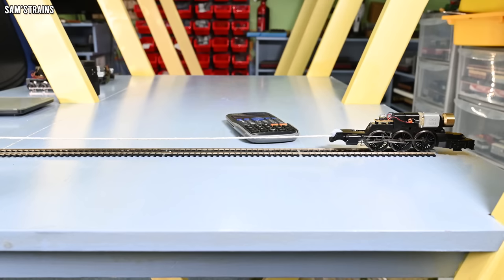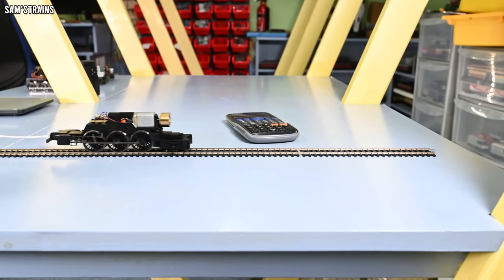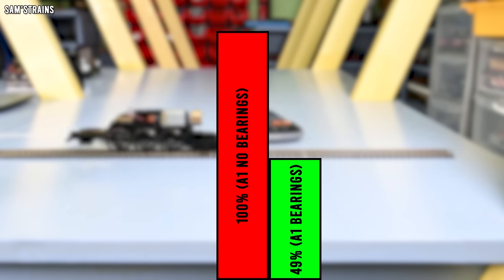And now I have a pretty conclusive result. The chassis without the proper bearings took an average of 16.16 grams to move it which is a force of 0.16 newtons. Now the chassis with the bearings took only 7.93 grams to move the loco and therefore the average force required here was 0.078 newtons which is only 49% of the force required to move the chassis without bearings. So that's pretty clear isn't it, but we need to try another example. Maybe the valve gear is different between the two locos so let's do this experiment with a different pair of chassis.